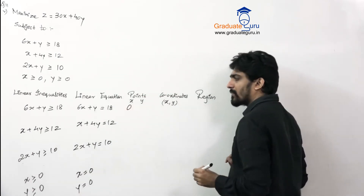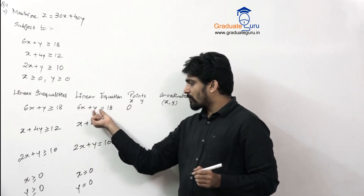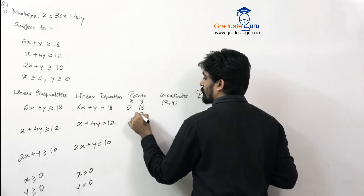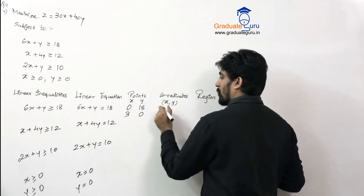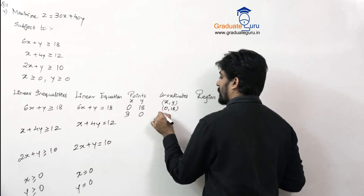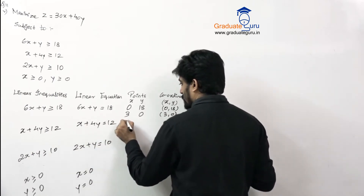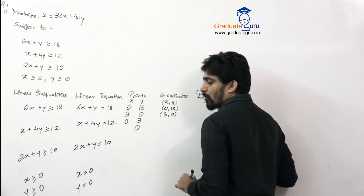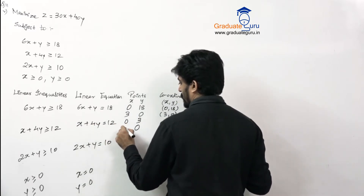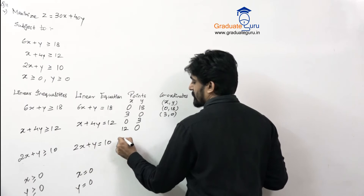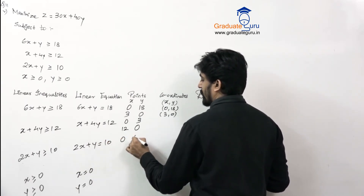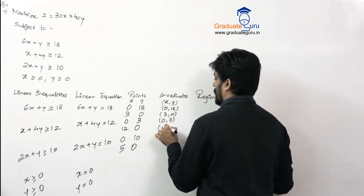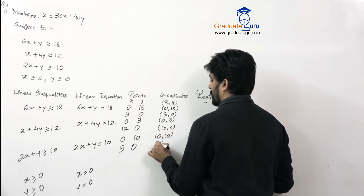For 6x + y = 18: substituting x = 0 gives y = 18, substituting y = 0 gives x = 3 — so points are (0, 18) and (3, 0). For x + 4y = 12: substituting x = 0 gives y = 3, substituting y = 0 gives x = 12 — so points are (0, 3) and (12, 0). For 2x + y = 10: points are (0, 10) and (5, 0).